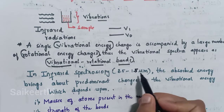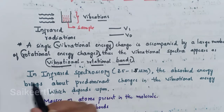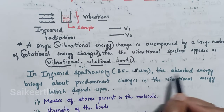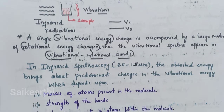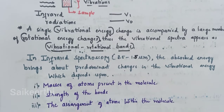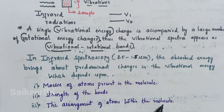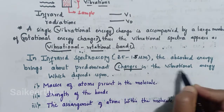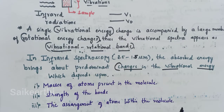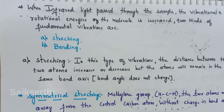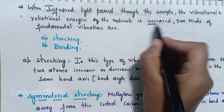Most molecules start to vibrate when they absorb radiation of 2.5 to 15 micrometers, that is in the infrared region. The observed energy brings about predominant changes in vibrational energy, which depends upon the masses of atoms present in the molecule, strength of the bond, and arrangement of atoms within the molecule. When infrared light is passed through the sample, the vibrational and rotational energy of the molecule is increased.